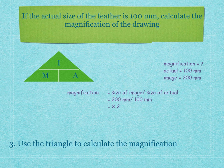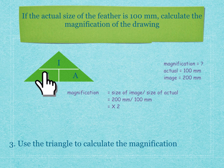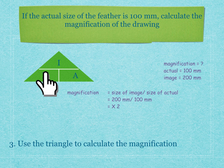Then, you're going to use the triangle to calculate the magnification. Draw your triangle in the exam, remembering I is always on top. We need to find magnification, so put your hand over M: M equals I divided by A, so size of image divided by size of actual. You say 200 millimeters divided by 100 millimeters, which equals times 2. So, the original image has been magnified two times to get that final drawing.